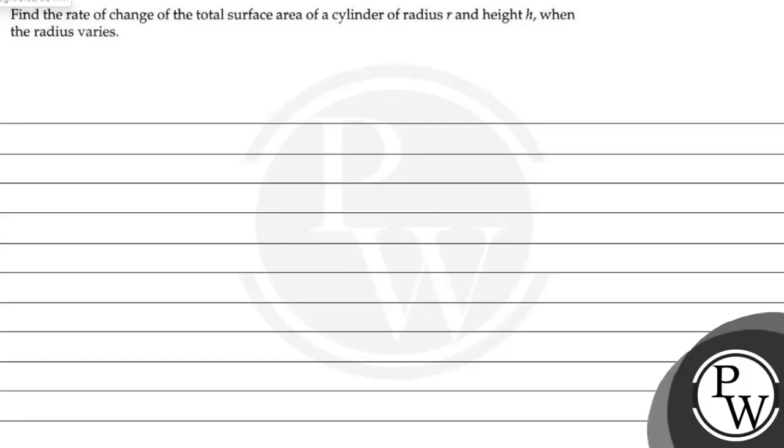Hello, let's first read the question. The question says: find the rate of change of the total surface area of a cylinder of radius r and height h when the radius varies.